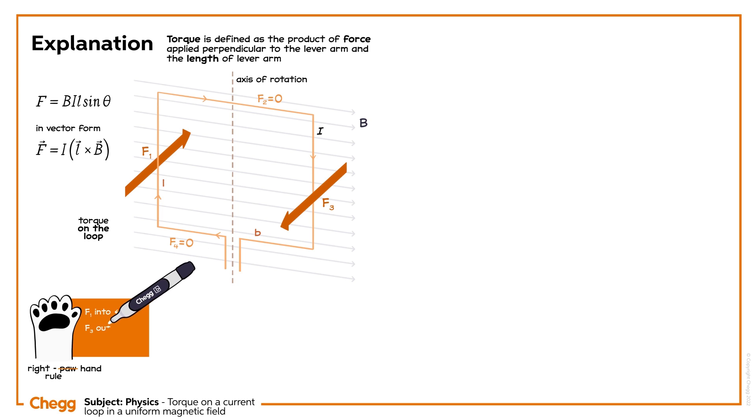Further, the forces f2 and f4 are equal to zero, because the angle between the length along the current direction and the field is either 0 degrees or 180 degrees, as they are either parallel or anti-parallel. Now the torque on the loop is,